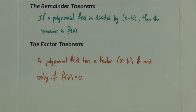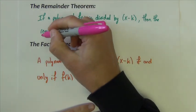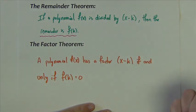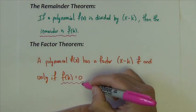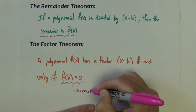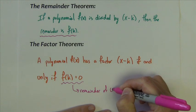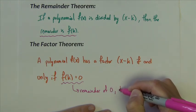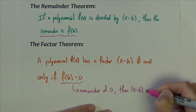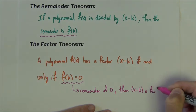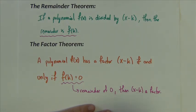If f of k equals 0 and f of k is the remainder, then what this is saying, if we get a remainder of 0, then x minus k is a factor. That's kind of the implication here. So if we divide, that's why we talked about long and synthetic division. If we divide by x minus k and we get a remainder of 0, then that x minus k just so happens to be a factor of the polynomial.